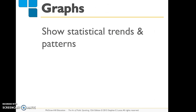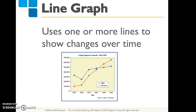The next type is graphs. Graphs are a good way to clarify and simplify statistics — they show statistical trends and patterns. There are different types of graphs to go over. The first is a line graph. Line graphs are best for illustrating statistical trends.